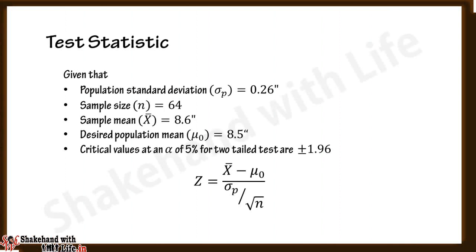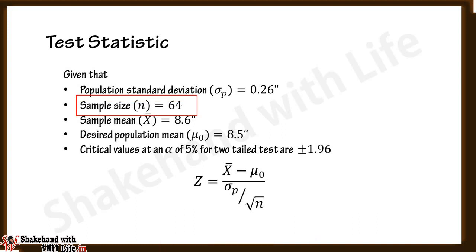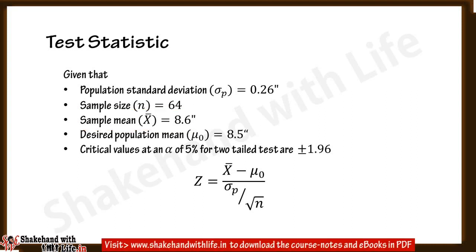Now come to the test statistic required to test the null hypothesis. In this problem the population standard deviation is given as σₚ = 0.26 inches, sample size n = 64, sample mean x̄ = 8.6 inches, and the desired population mean is 8.5 inches for considering the process is working properly.